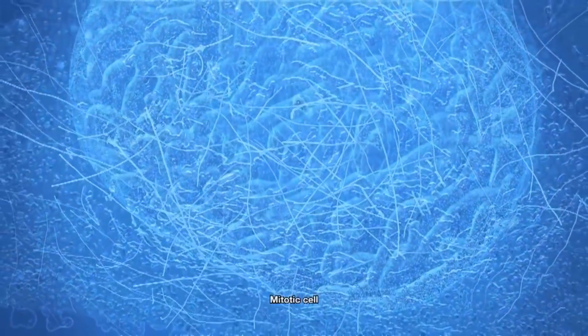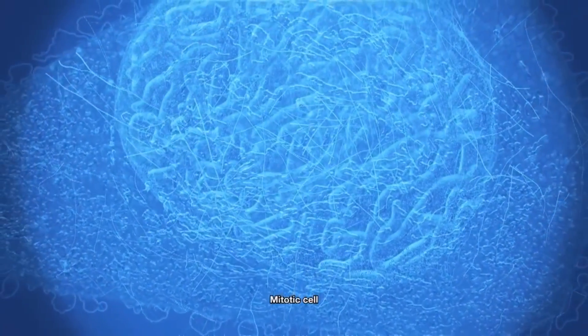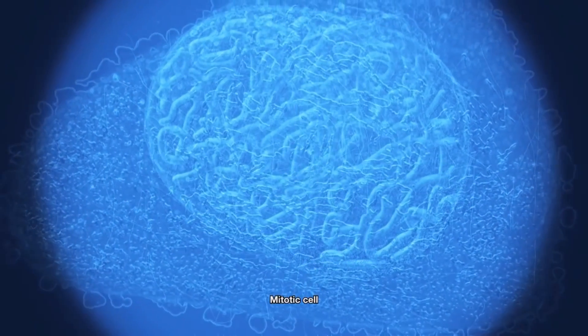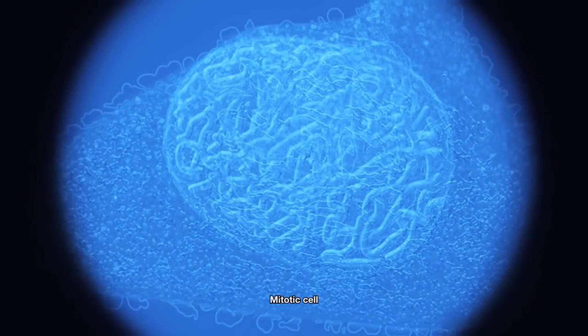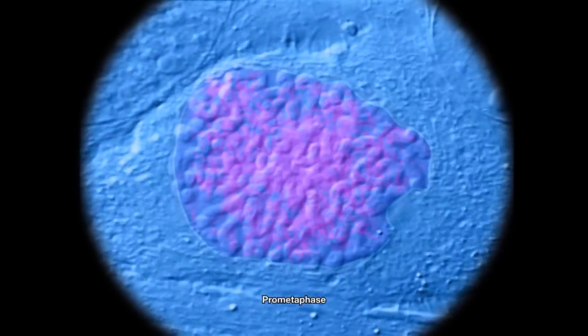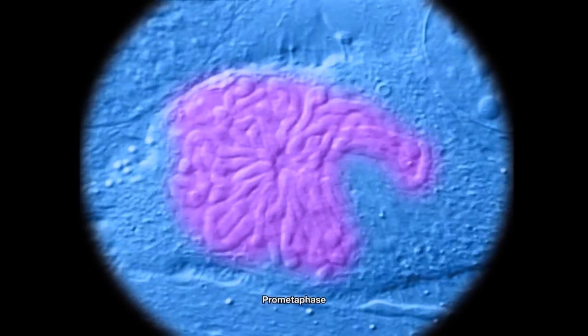We are zooming back to reveal a cell about to undergo mitosis. The nuclear membrane breaks down, releasing the chromosomes.